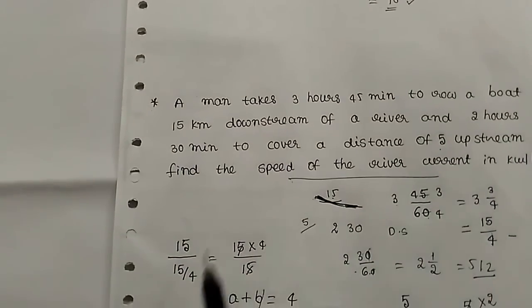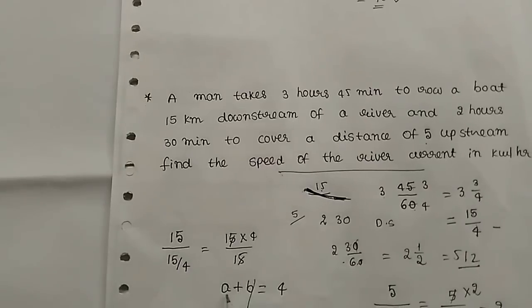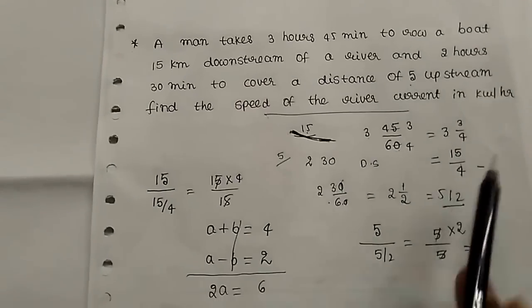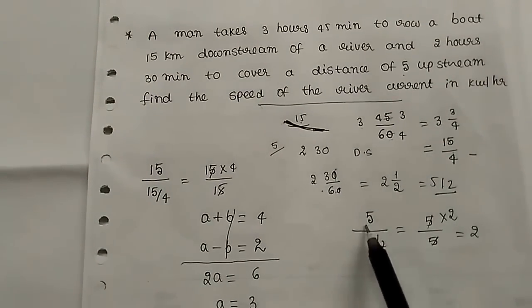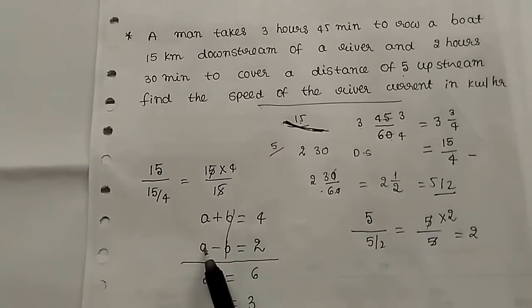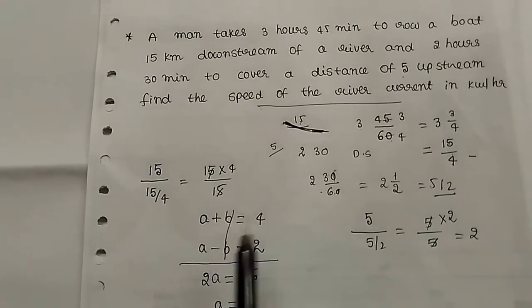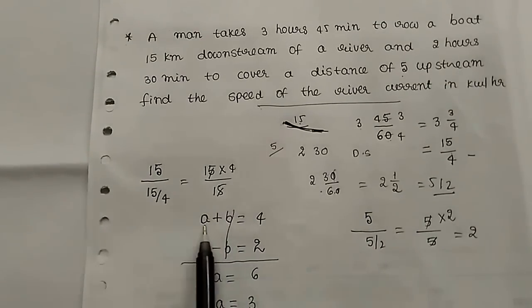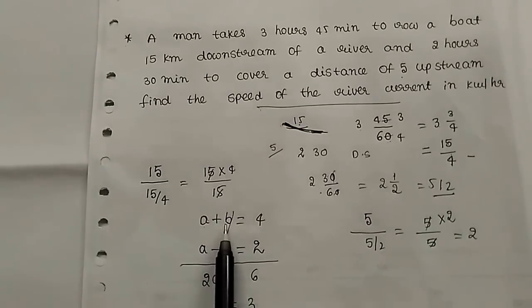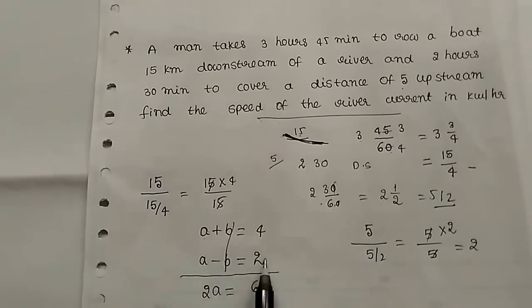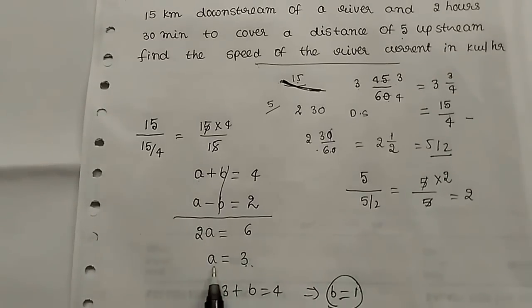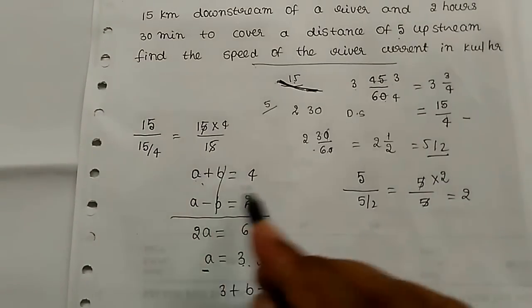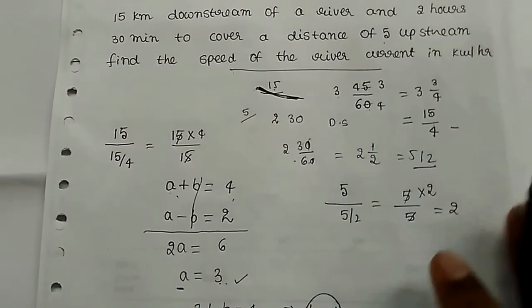Downstream: 15 km distance, 15 by 4 time — 15 cancels, so a plus b equals 4. Upstream: a minus b equals 2. A means man-boat speed in still water, b means current river speed. Solving the equations: a equals 3 and b equals 1. Subscribe and share if you have questions about the answer.